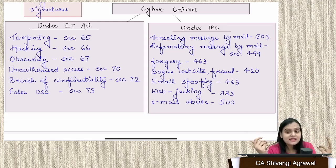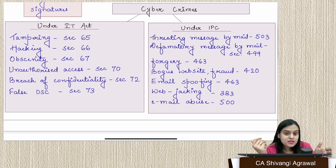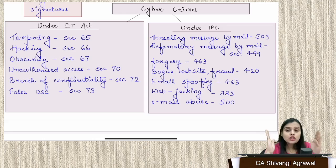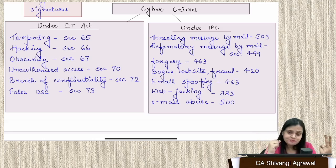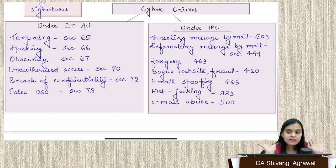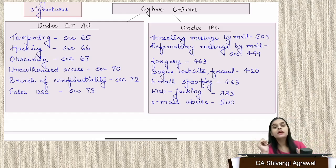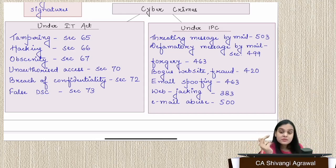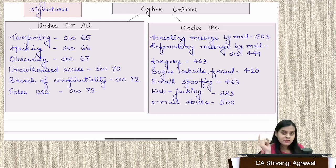Under the IT Act: tampering (Section 65), hacking (Section 66), obscenity (Section 67), unauthorized access (Section 70), breach of confidentiality (Section 72), and false certificate (Section 73). These section numbers are to be learned for the examination. Under the IPC: threatening by email (Section 503), defamatory message by email (Section 499), forgeries (Section 463), bogus website fraud (Section 420), email spoofing (Section 463), web jacking (Section 383), and email abuse (Section 500).